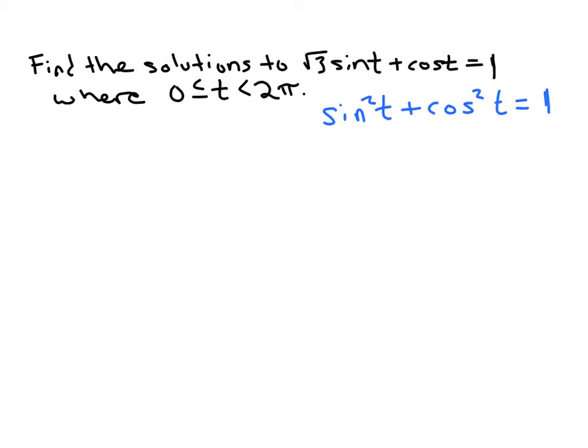This allows us to turn, say, sin²t into 1 - cos²t. But the squared portion of that is critical. So if it's just sine to the first, I can't turn that into a function of cosine the way this thing is written.